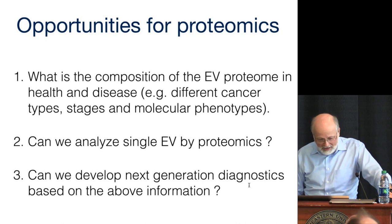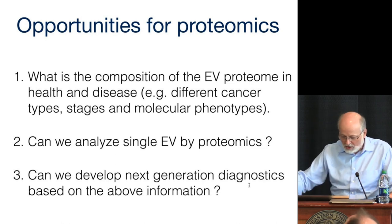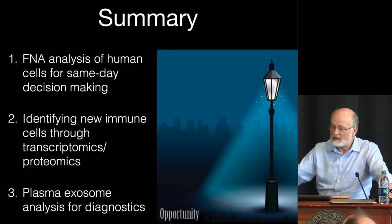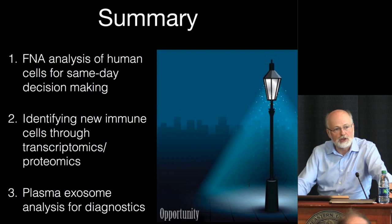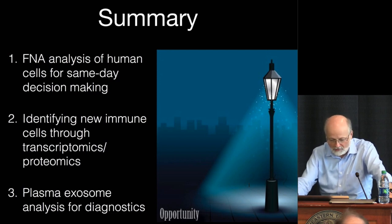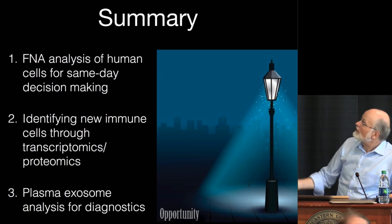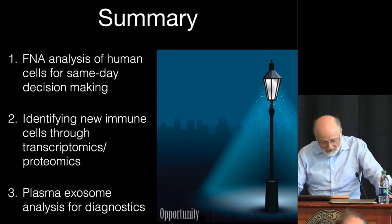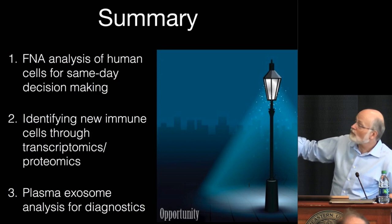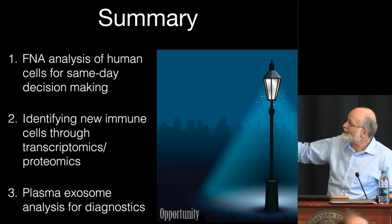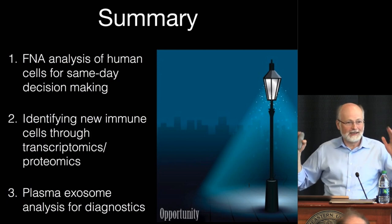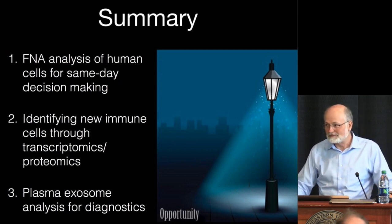I've shown you three different examples of how we do diagnostics in the clinic: through FNA analysis of human cells, identifying new immune cells through transcriptomics, and doing plasma exosome analytics for diagnostics. The current systems work okay, but they could be much better if we had a better understanding of the proteome and what to look for. Probably the best way to think about this is the lamppost analogy: right now we're looking right under the lamppost where there is light. The opportunity is in the dark, and that's what we need proteomics for.